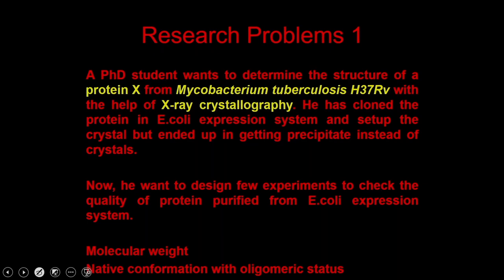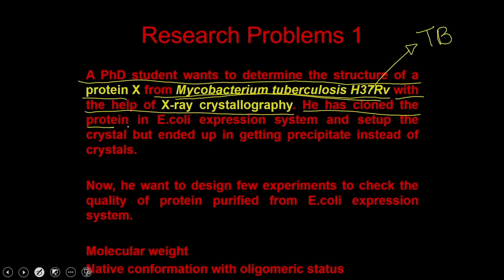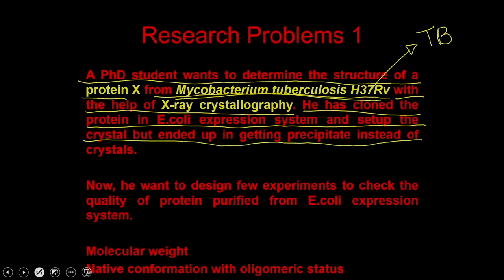The first question is about a PhD student who wants to determine the structure of protein X from Mycobacterium tuberculosis H37Rv, the causative agent for tuberculosis, with the help of X-ray crystallography. He has cloned the protein in an E. coli expression system, purified the protein, and set up crystals. But instead of getting crystals, he was getting precipitate.